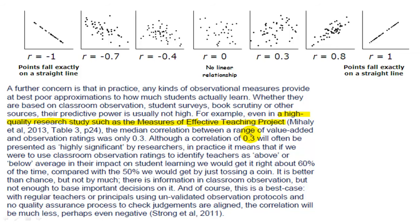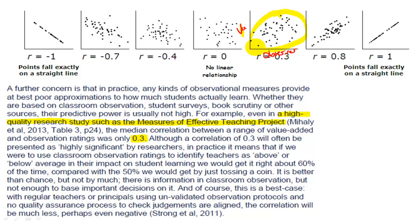The median correlation between the range of value-added and observational weighting was only 0.3. So essentially: an observer comes into your lesson, watches you, and makes a prediction about how well your students will do. This is about as accurately as they're going to be able to predict how much value-added you're going to contribute.